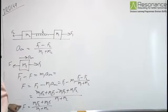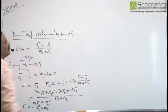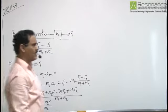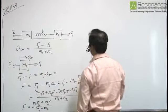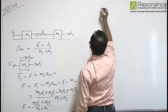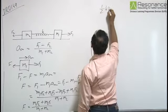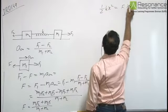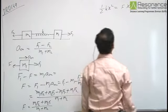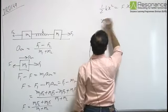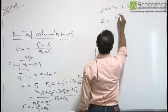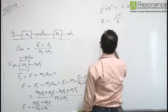If the spring is elongated by a distance X, the energy stored in the spring, half KX squared, equals the work done F times X. Solving this gives X equals 2F divided by K.